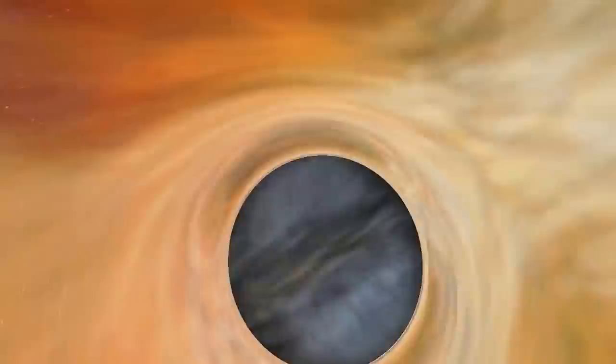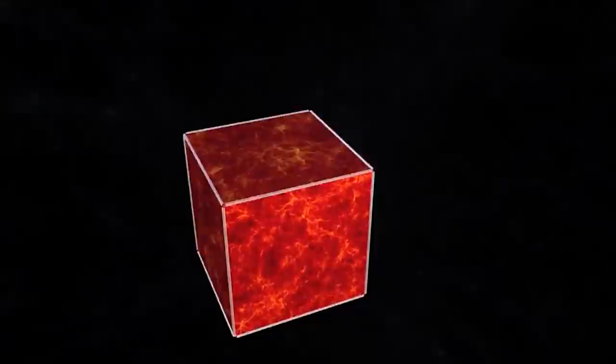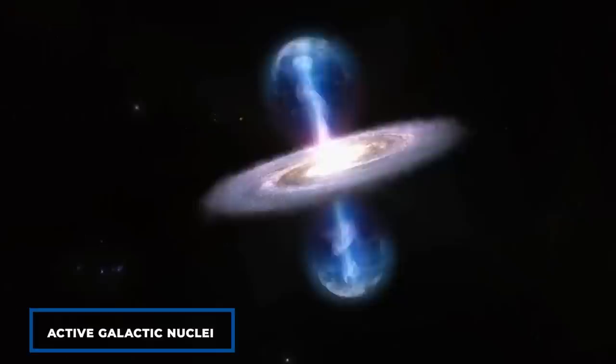Black holes form from the collapse of massive stars and continue to grow indefinitely by devouring gas, dust, stars, and even other black holes. As material spirals into these enigmatic cosmic voids, friction causes it to heat up, emitting detectable light that transforms them into active galactic nuclei, AGN. Among AGN, quasars stand out as the most extreme.